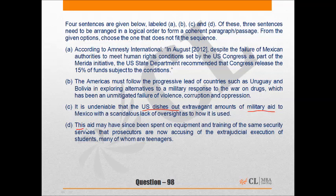D follows A because D refers back to the aid mentioned in A and says that this aid was probably used extrajudicially — it was not used judicially. This is also another example of the aid that the US gave to Mexico not being properly overseen by the US.